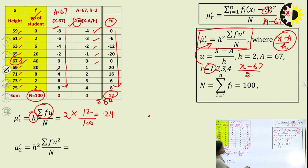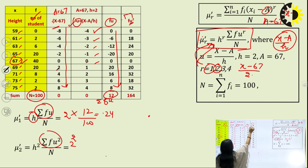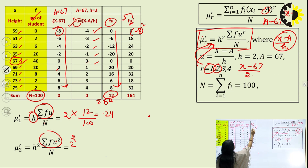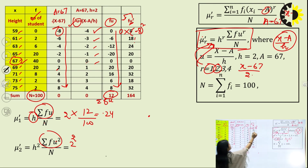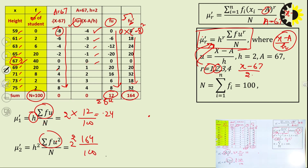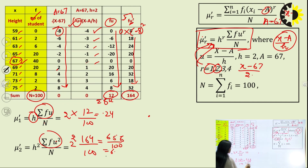For the second moment: mu2 dash equals h² × summation(fu²) upon n. With h equal to 2, we find the square of u series, multiply by corresponding frequencies, and sum to get 164. So mu2 dash equals 4 × 164 upon 100, which equals 6.56.